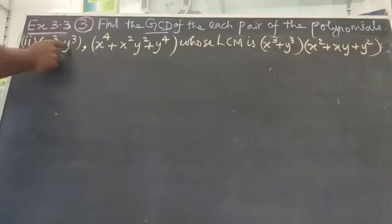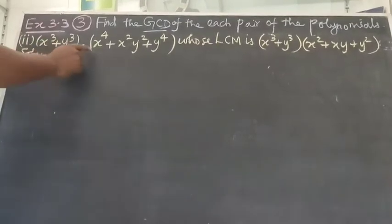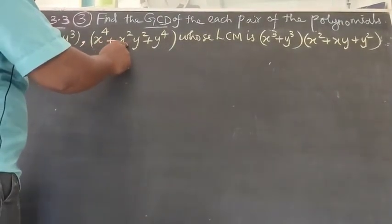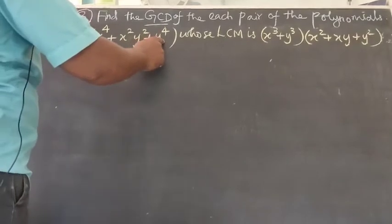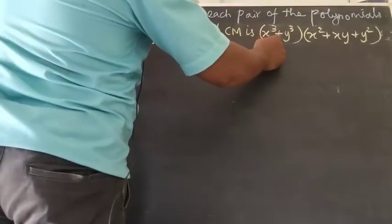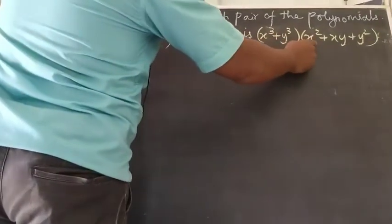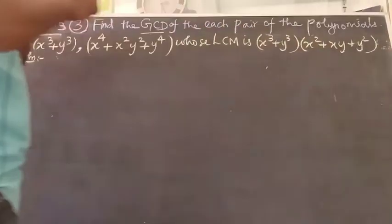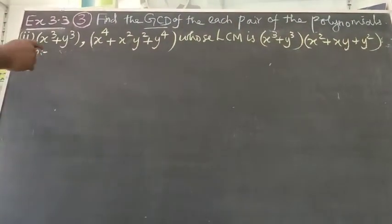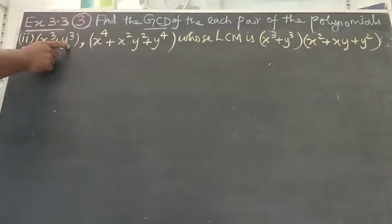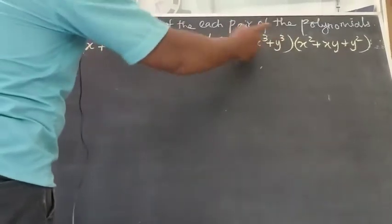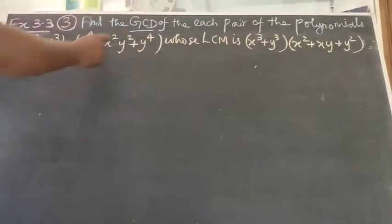Second question: the polynomials are F(x) = X cube plus Y cube, and G(x) = X power 4 plus X squared times Y squared plus Y power 4, whose LCM is X cube plus Y cube times X square plus XY plus Y squared. Find the GCD.